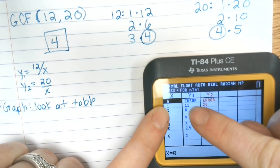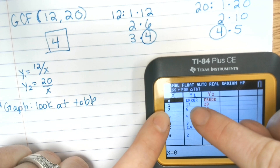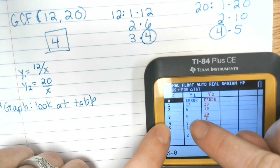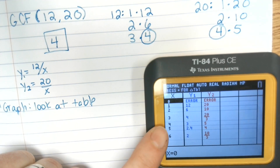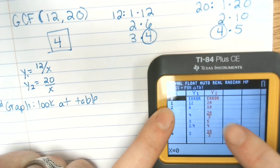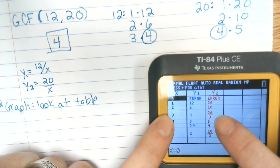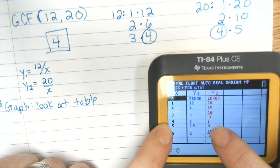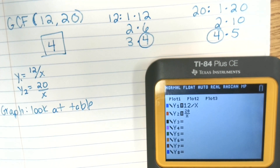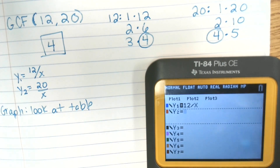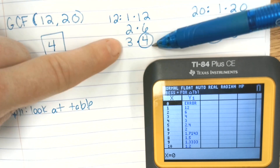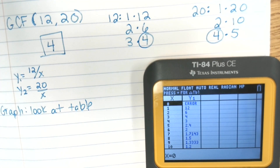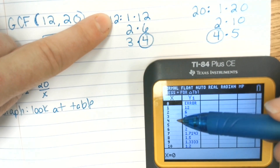Starting with 12: 1 times 12. See how 1 and 12 are x and y pairs? Then 2 and 6, 3 and 4, 4 and 3. Then we have 5 and 2.4 — we don't want anything that has decimals or fractions. For 20: we have 1 and 20, 2 and 10, 3 is no, 4 and 5, 5 and 4. Anything that's a decimal is not a factor because it has to be a whole number. You can get your factor list from the table on the calculator.